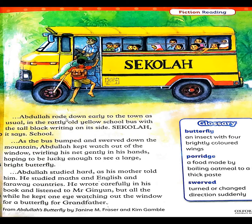Abdullah rides toward town as fast as he can in the rattly old yellow school bus. Rattly old yellow means an old bus that makes a lot of noise — purani gaadi zyada awaz karti hai. On the side of the bus, there is tall black writing: S-E-K-O-L-A-H, which means 'school'.